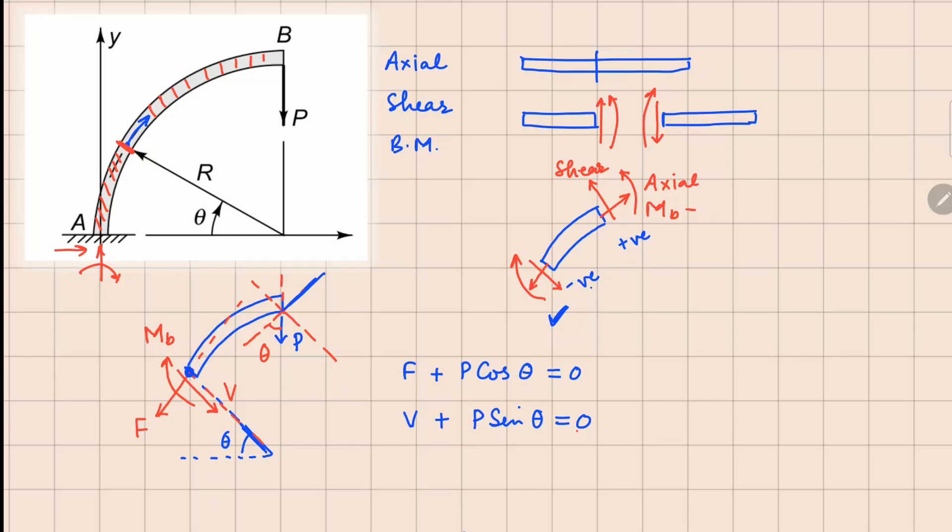Now for the moment, I can take moment about this point. So both F and V, they will pass through that point, so they will not contribute to moment. So we are going to have M_B, this will give you a clockwise moment. And this force P also will give you a clockwise moment. And the distance from here to here is going to be this distance right here.